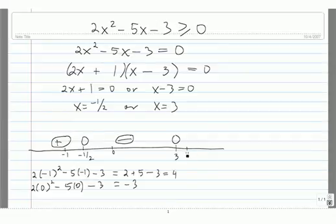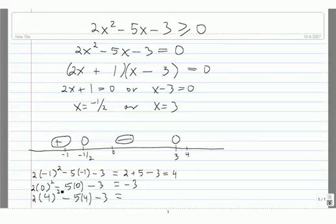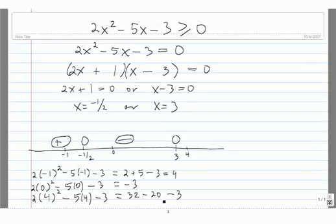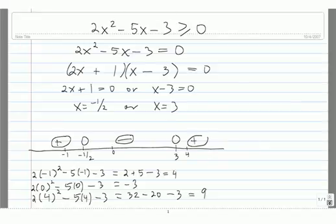Finally, we test the point 4. We have 2 times 4 squared minus 5 times 4 minus 3, which equals 2 times 16, so 32, minus 5 times 4, which is 20, minus 3. That equals 32 minus 20 minus 3, which is 9. Since 9 is a positive number, we know that for all x values greater than 3 our function is positive, so we put a plus there.